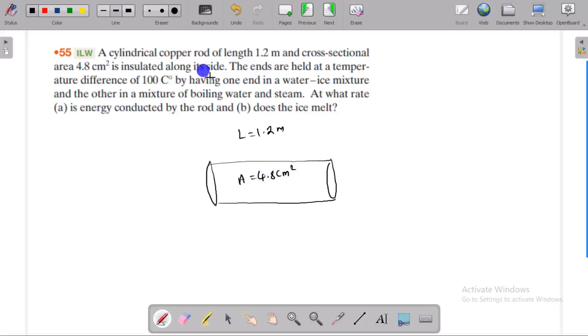Insulated along its sides. Heat transfer, radiation index. The ends are held at a temperature difference of 100 degrees Celsius by having one end in a water-ice mixture and another end is a mixture of boiling water and steam.